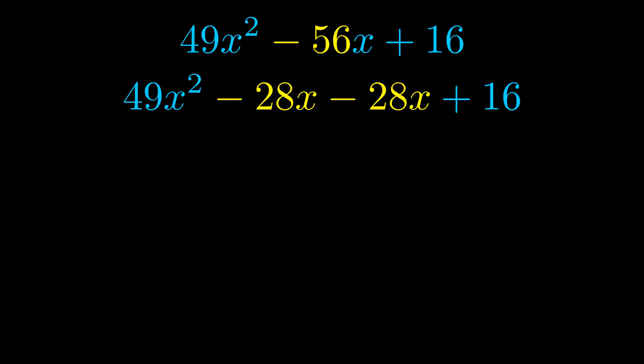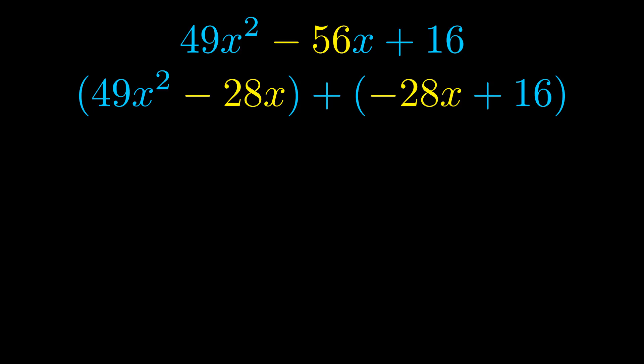Once we've done this we go ahead and put parentheses around the first term and the last term so that we can take the greatest common factor out of both terms. We can see the greatest common factor is now outside in green.